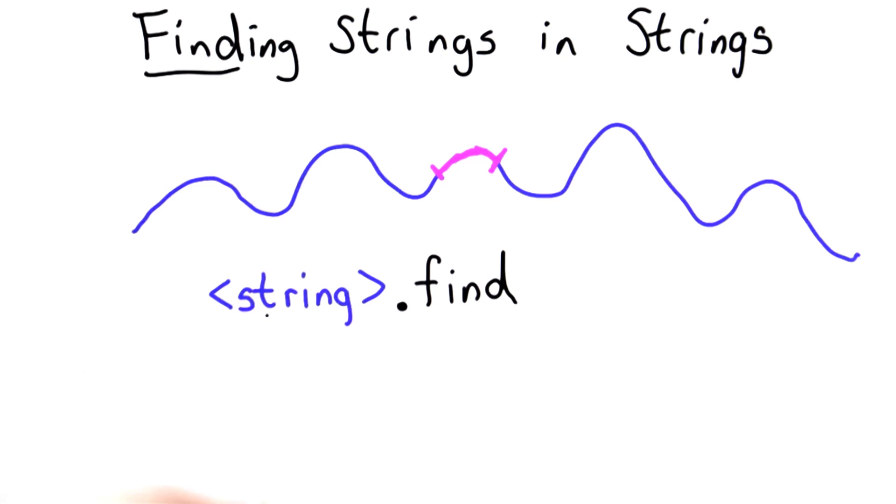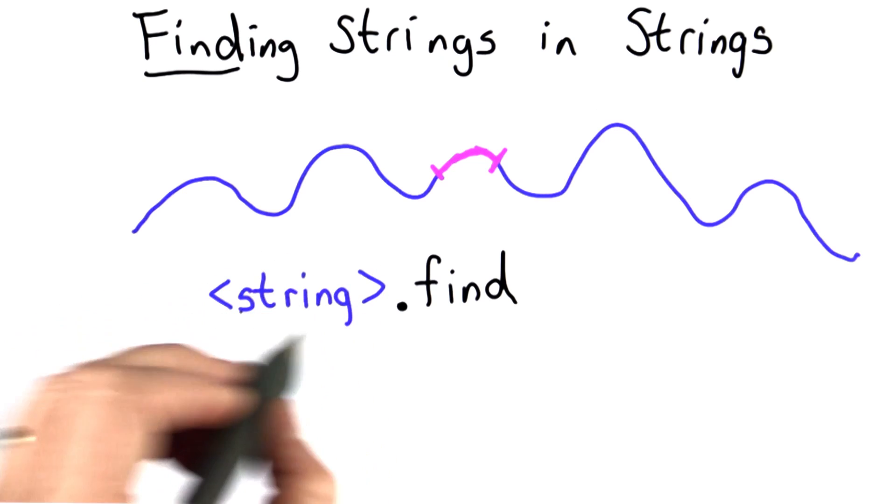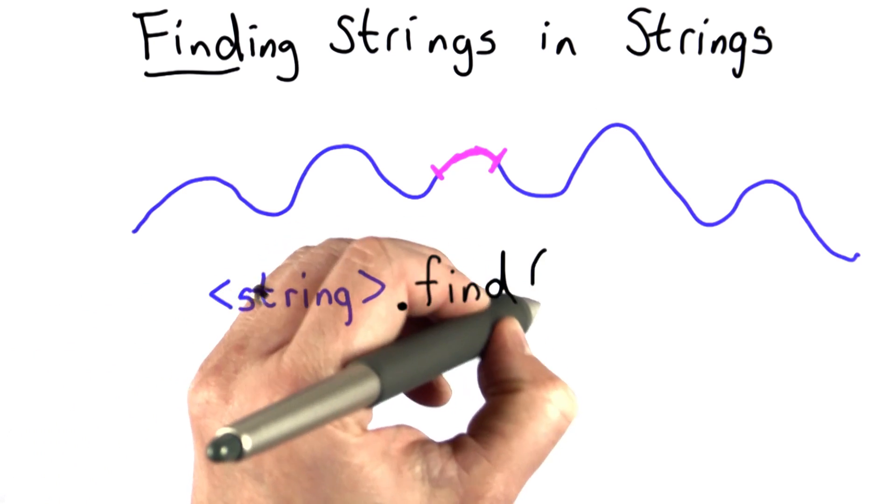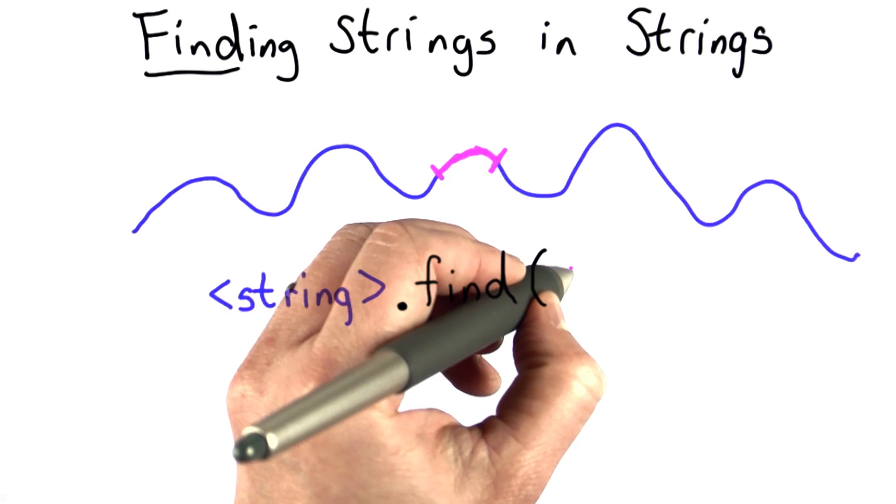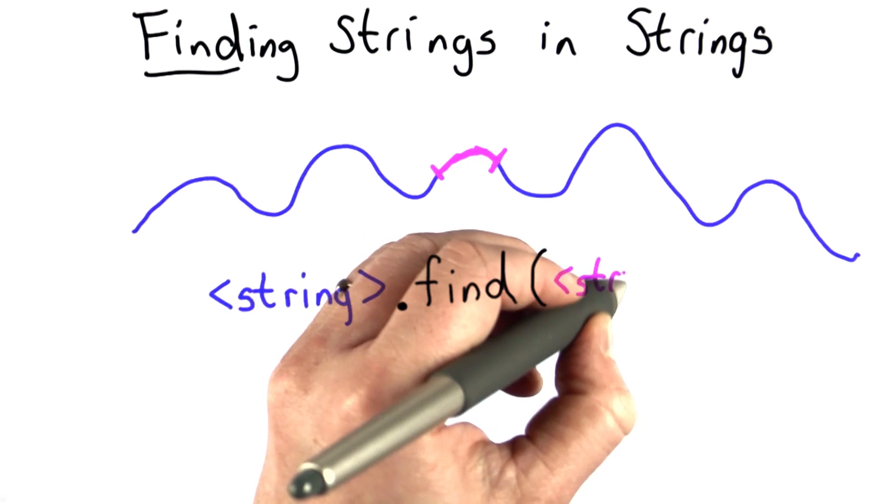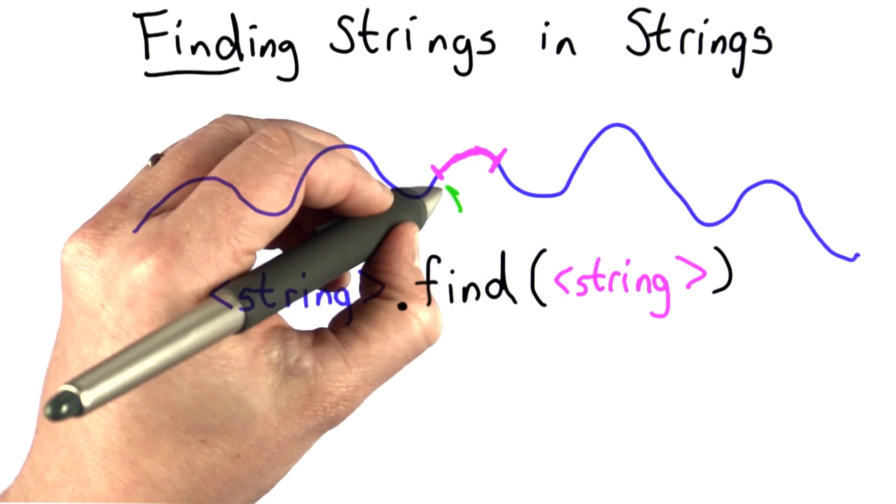Find is a procedure that operates on strings. So we use it by having a string, followed by .find, followed by a parenthesis, and then we pass in another string, which is the string that we want to find in the first string.